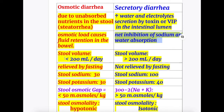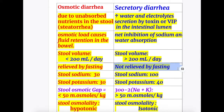The stool volume in osmotic diarrhea is less than 200 ml per day, whereas in secretory diarrhea it is more than 200 ml per day. Osmotic diarrhea is relieved by fasting, whereas secretory diarrhea is not relieved by fasting.